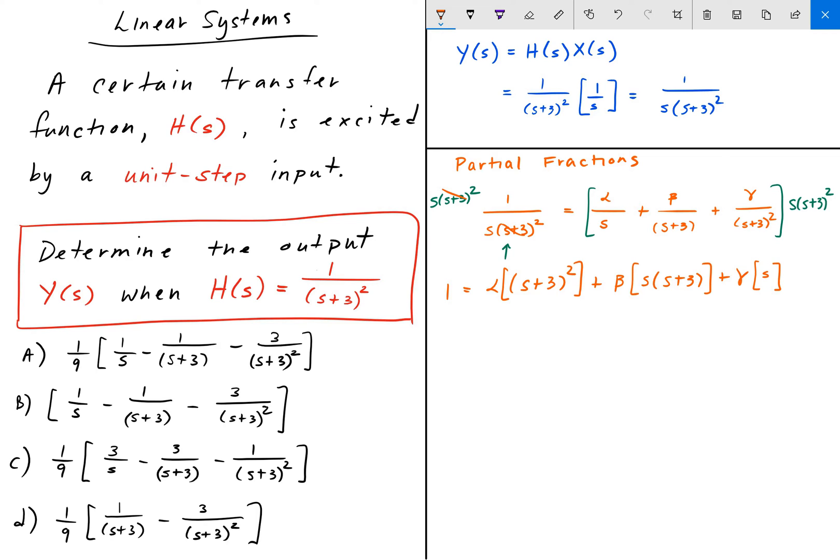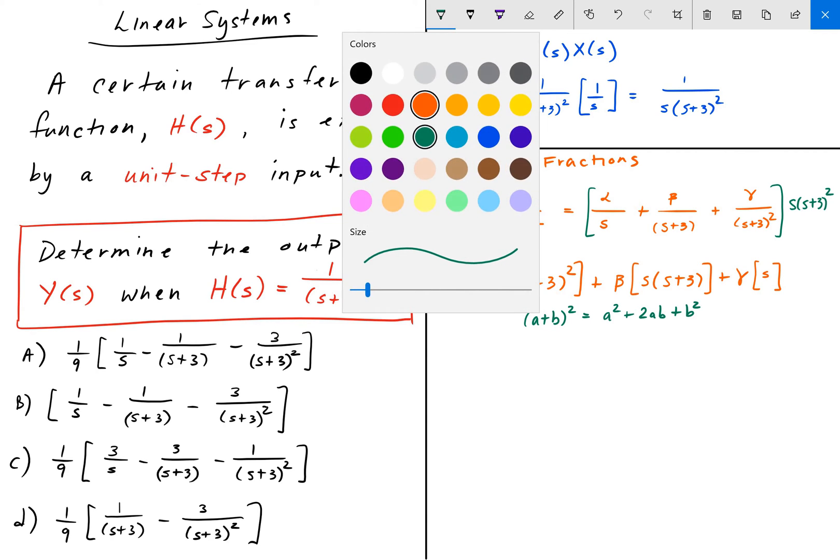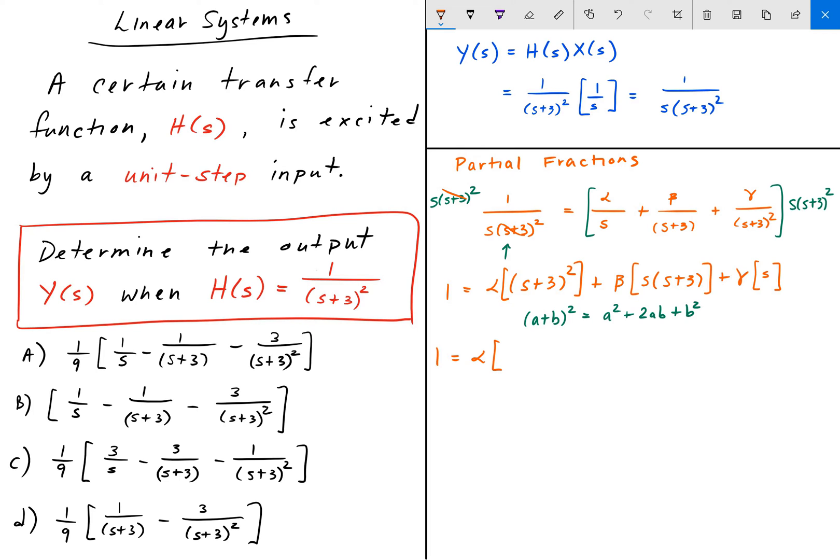And now we're going to expand the alpha term. So, in order to expand the alpha term, remember that (a+b)² is a² + 2ab + b². So 1 equals alpha times s² + 6s + 9. And then for the beta term, we just distribute the s, so s² + 3s. And lastly, gamma s. Next, we distribute the alpha, the beta, and the gamma.